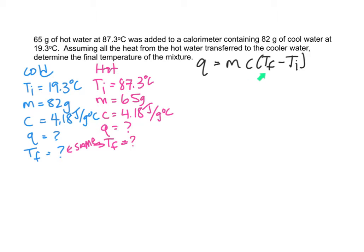So, Q is equal to mc delta t, which is t final minus t initial. We don't know Q, and we don't know t final. So, you can't have two unknowns.